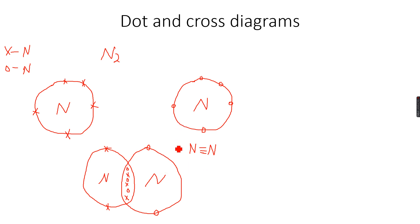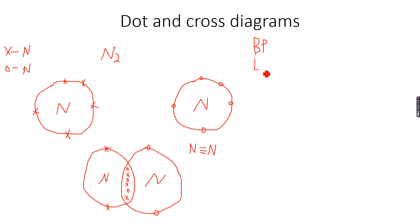One thing before we move to the next topic: these are called bonded pairs of electrons — you can see the three bonded pairs of electrons — so we can say BP, bonding pairs. And then the ones that are left are called lone pairs. Each nitrogen atom has one lone pair. So they are called lone pairs of electrons.